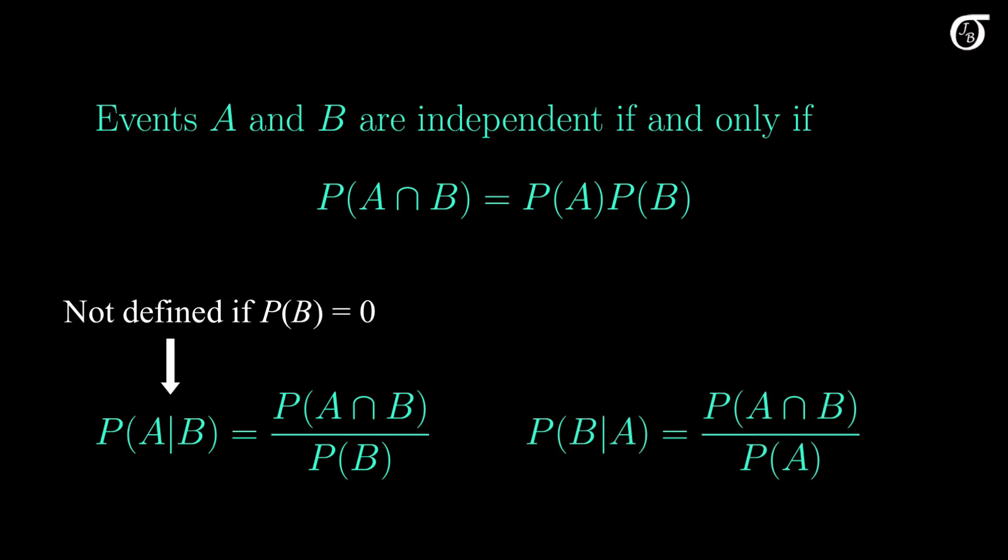Similarly, here's the conditional probability formula for event B, given event A has occurred. But this is not defined if the probability of A is 0. So we run into snags in the zero probability case, and that zero probability case is meaningful for the problem we're looking at in this video.